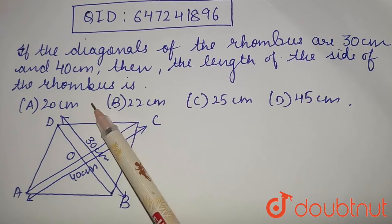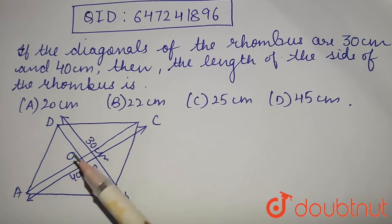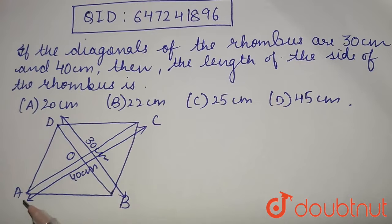So ABCD is a rhombus. And its diagonals are AC and BD. The bigger diagonal is 40 cm and the smaller diagonal is 30 cm.